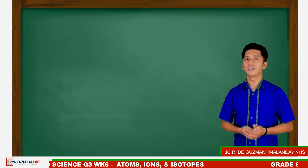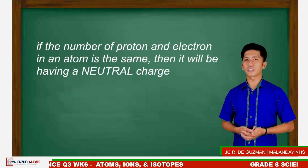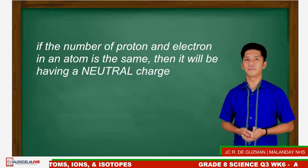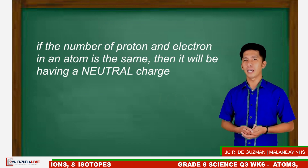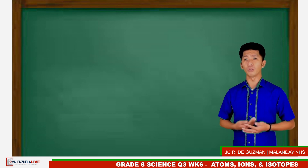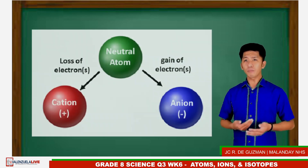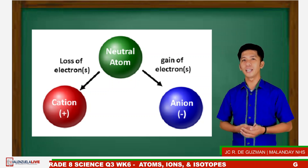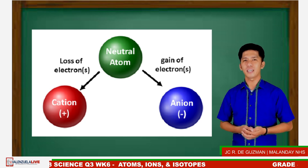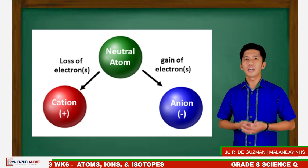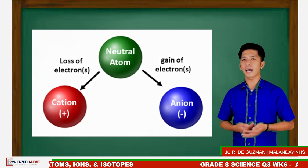On the other hand, if the number of protons and electrons in an atom is not the same, then it will have a positive or negative charge respectively, and that is what we call an ion. Each atom has the capability to lose or gain charges or remain neutral. If an atom gains an electron, the atom will be negatively charged and is called an anion. If an atom loses one or more of its electrons, it becomes more positive and is called a cation.